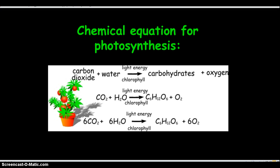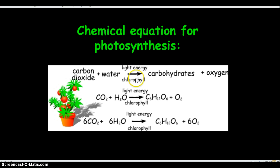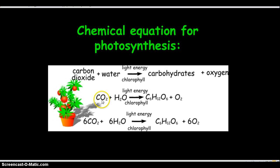Now we have the chemical equations for photosynthesis — there are three of them. Make sure you write all three down. Number one is the word form: carbon dioxide plus water, and then a chemical reaction takes place. You need light energy in order for photosynthesis to occur. It's going to turn into carbohydrates and oxygen. Carbohydrates are made out of glucose.